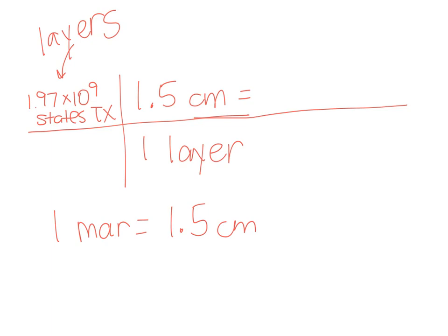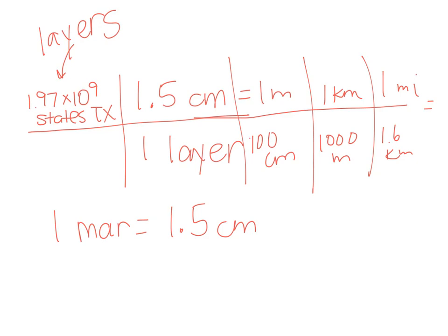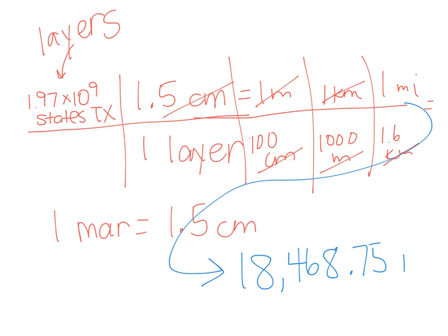Well, let's keep going because we don't really care about centimeters. They're too small. Let's change this into miles. So 100 centimeters is a meter, and 1.6 kilometers is a mile. Now I'm going to get some really good information that I can relate to. My centimeters go away, my meters and kilometers go away, and we type that into our calculator. Now this is a number you can relate to. If I had a mole of marbles and I covered the state of Texas 1.97 billion times, we would be covered in marbles to a depth of 18,468.75 miles deep.